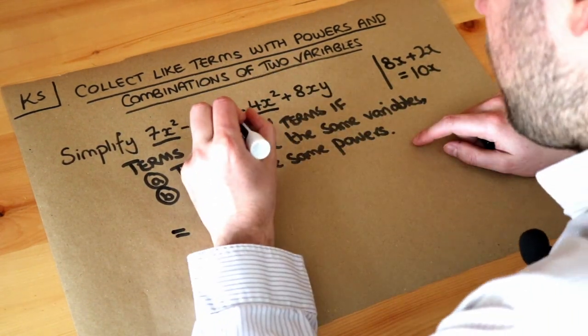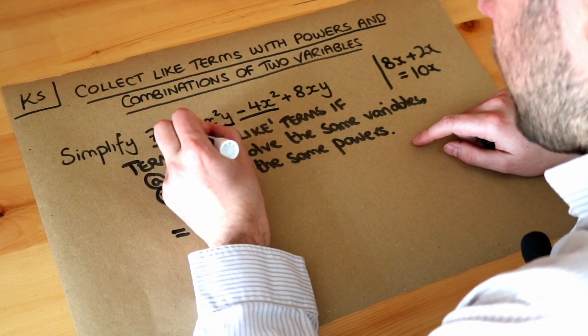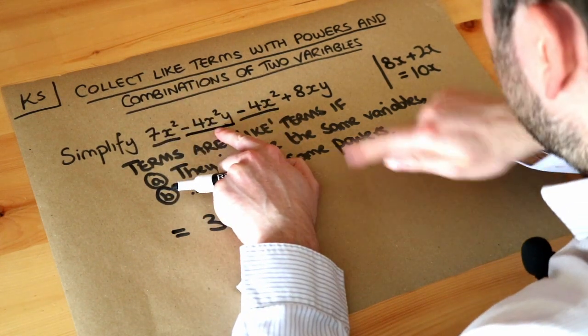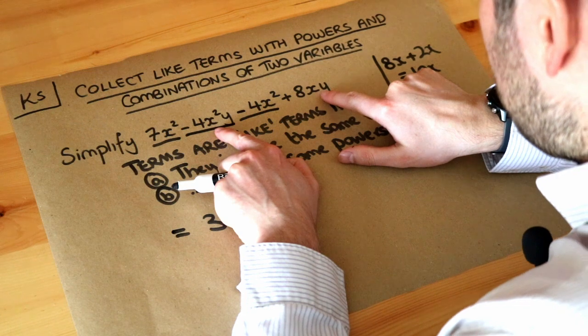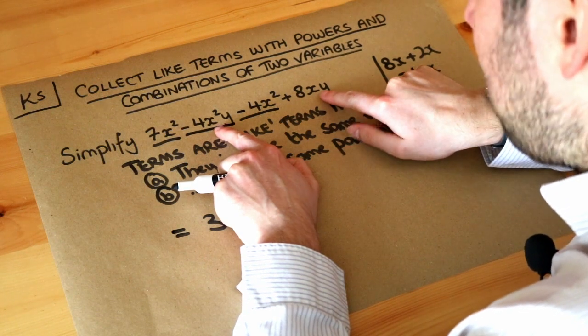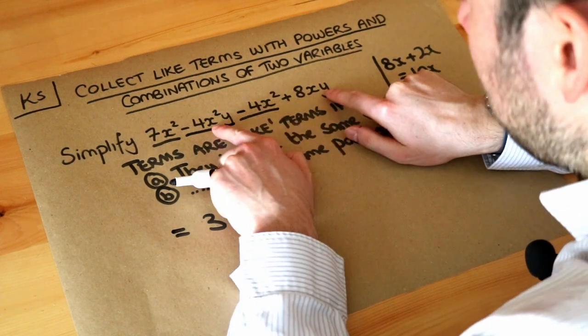What about the other terms? We've now got minus 4x squared y. Now the only other term is this one. Does this involve the same variables and the same powers? Well this one involves x and y, this involves x and y, so they involve the same variables, but they're not the same powers.